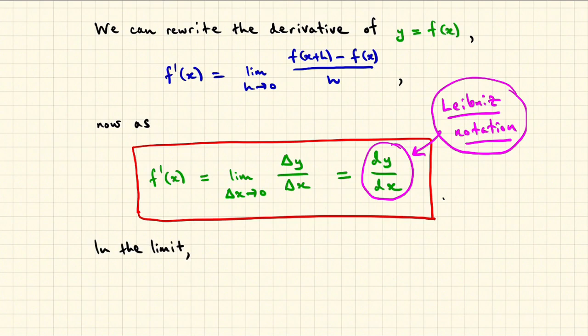Informally, in the limit, you can think of the Greek delta x turning into the Latin lowercase dx and the Greek delta y turning into the Latin lowercase dy.